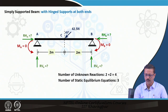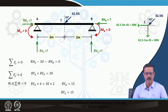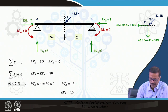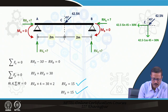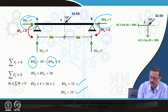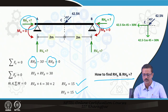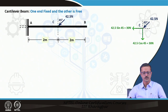In the double-hinge case, there are 2 + 2 = 4 unknowns and only 3 equations, so it is statically indeterminate. While R_V values of 15 each can still be found, the two horizontal reactions cannot be individually determined — only their sum is known from sigma Fx = 0, leaving one equation short for 2 unknowns.